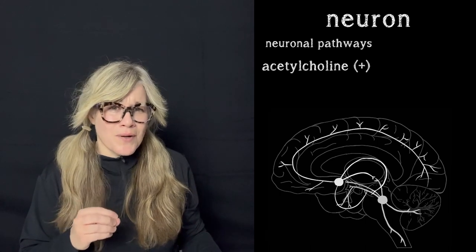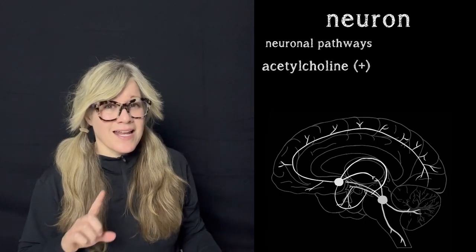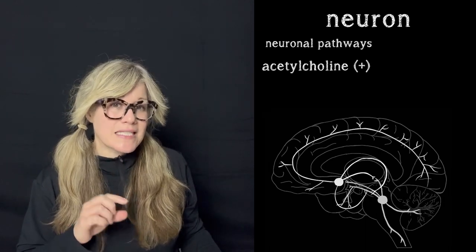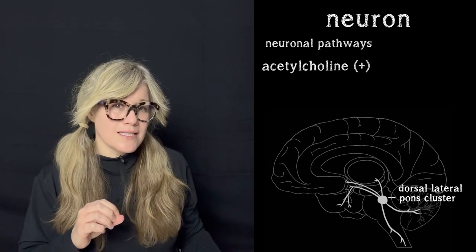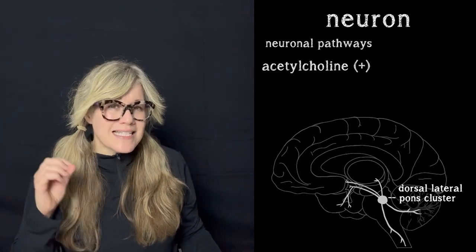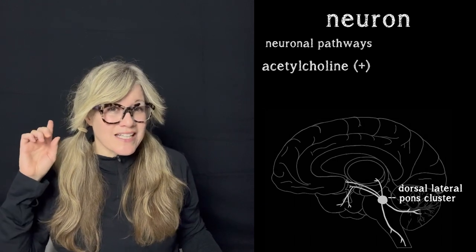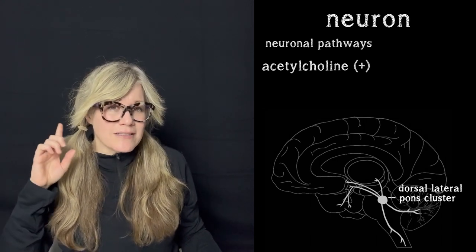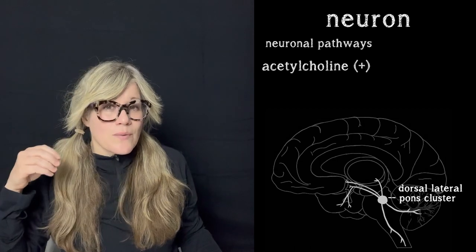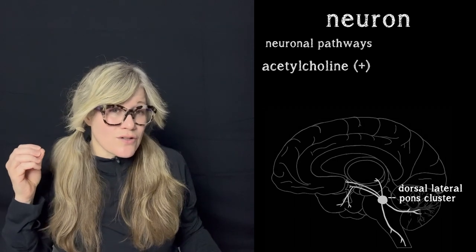Another cholinergic pathway begins in the basal forebrain — basal means base — so at the base of the forebrain there is a constellation of cholinergic neurons.